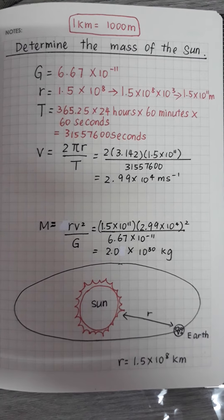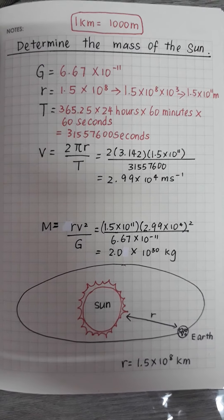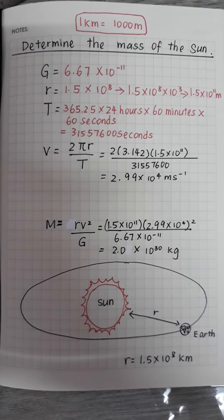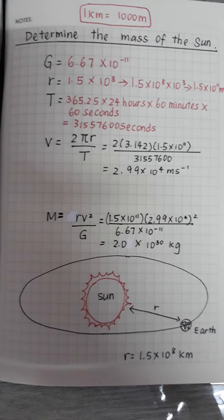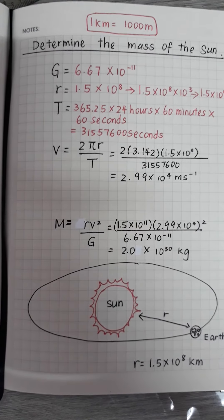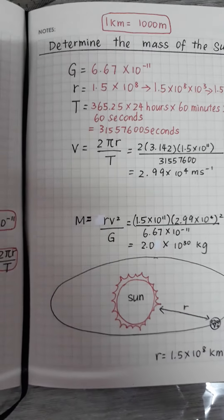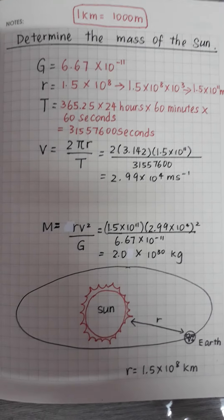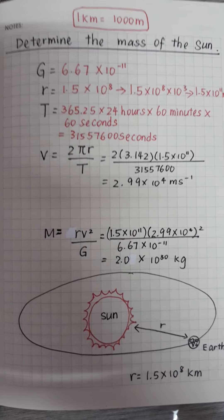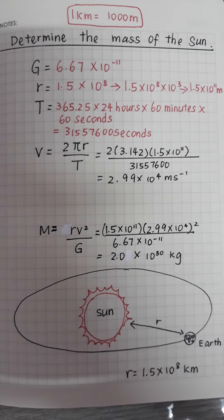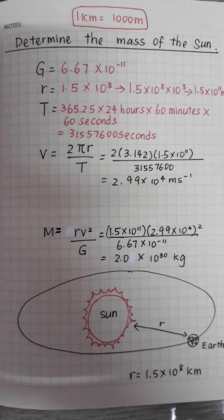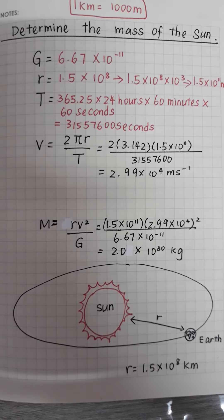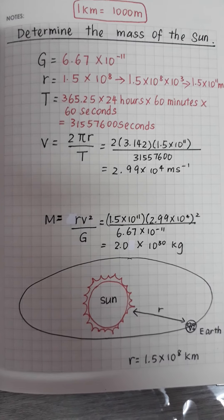T, which is the period, in physics we have to find the period in the unit of seconds. Since it gives us 365.25 days, we have to times 24 hours a day, 60 minutes per hour, 60 seconds per minute, equivalent to 31557600 seconds.